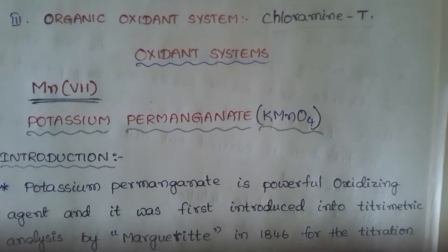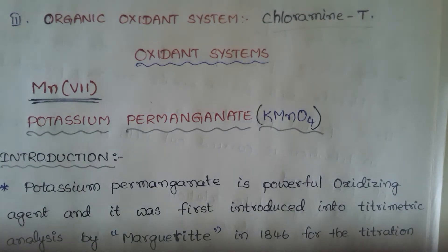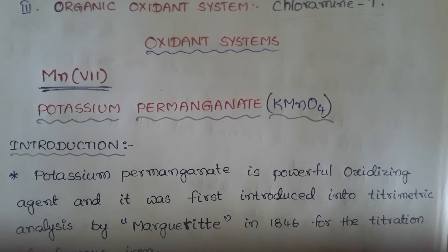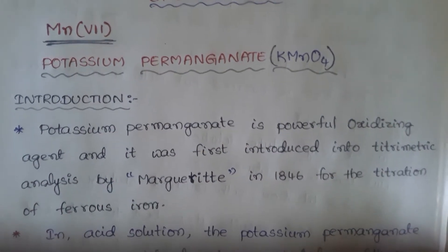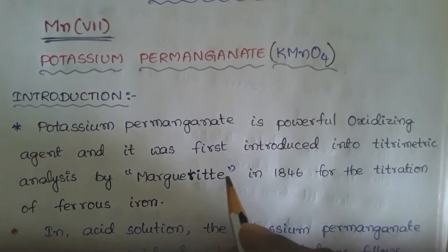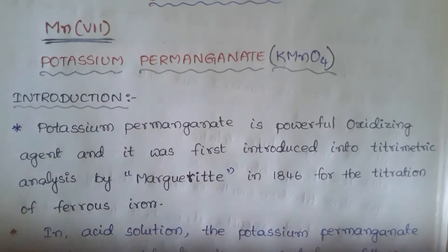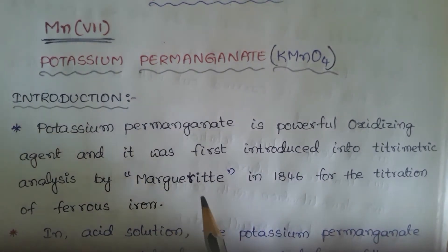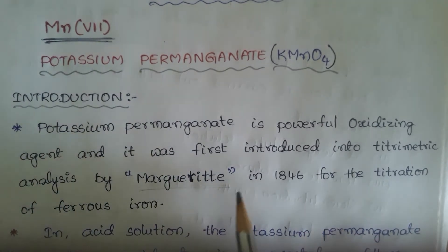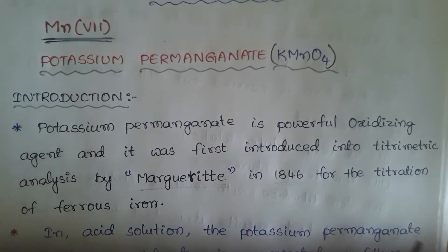In today's class, I wish to discuss about Mn7, that is potassium permanganate, which is a powerful oxidizing agent. Generally, potassium permanganate was used as an oxidizing agent by Margaret in 1846 for the titration of ferrous iron, that is Fe(II).